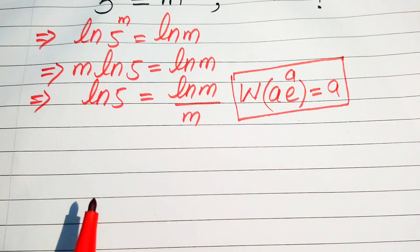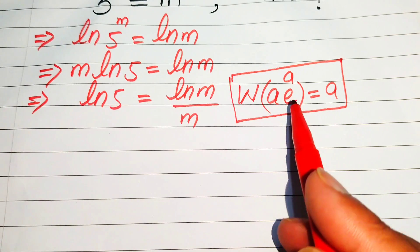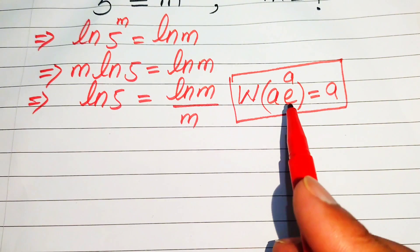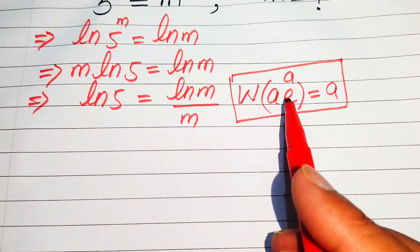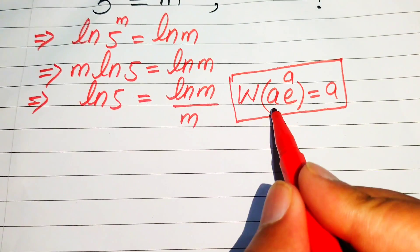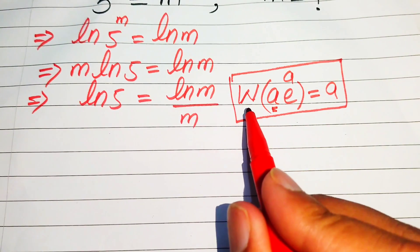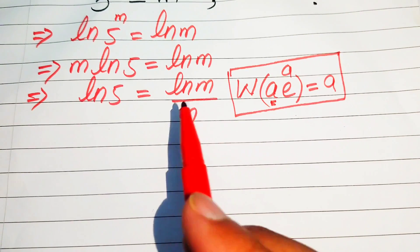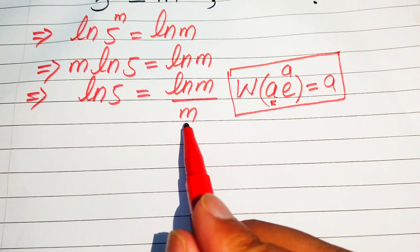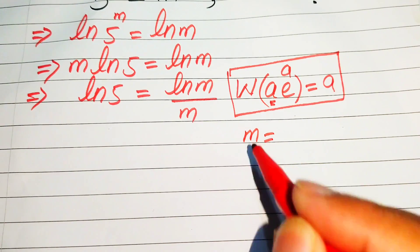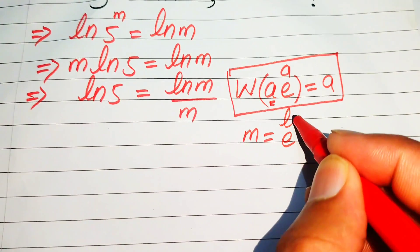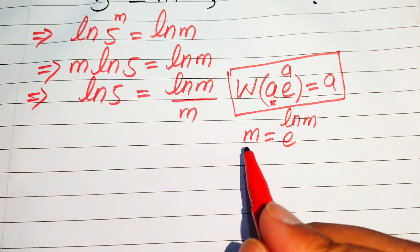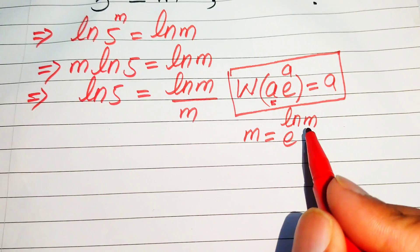In the next step, we make the right-hand side match this form, and then we apply the Lambert W function. The expression needs to be an exponential function whose exponent is multiplied in front. Then we apply the W function and get the output a. Here we focus on m and rewrite m as e to the power of log m.